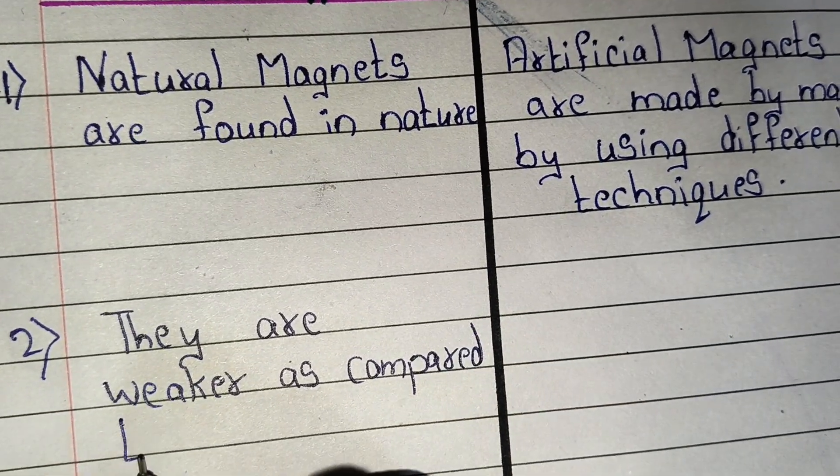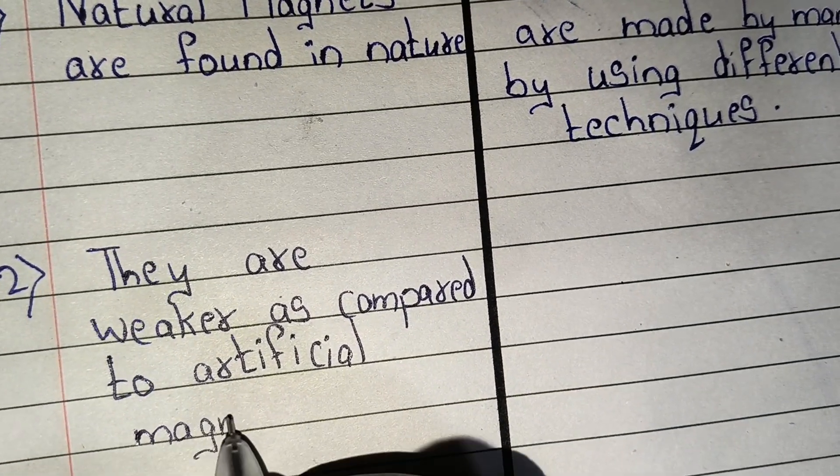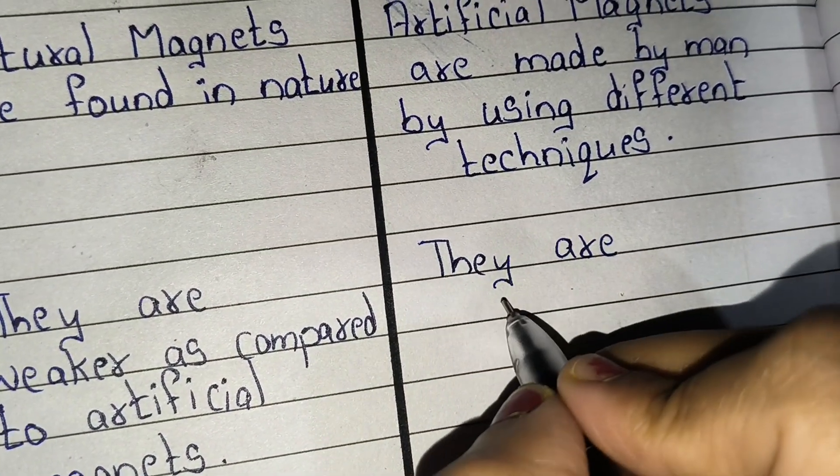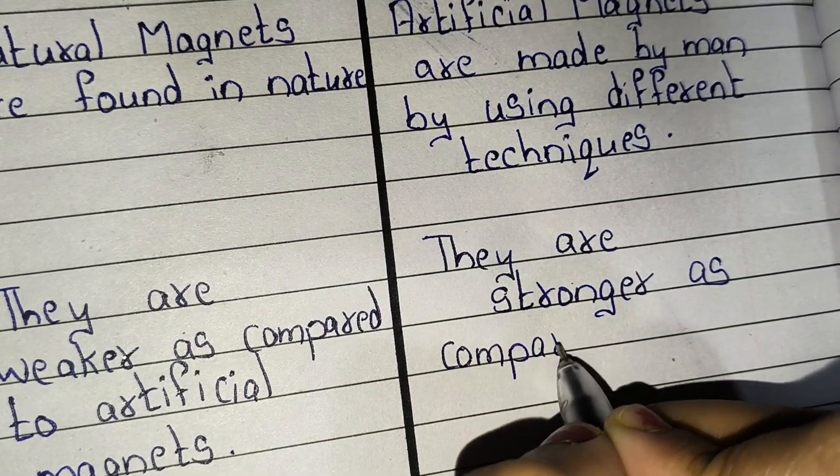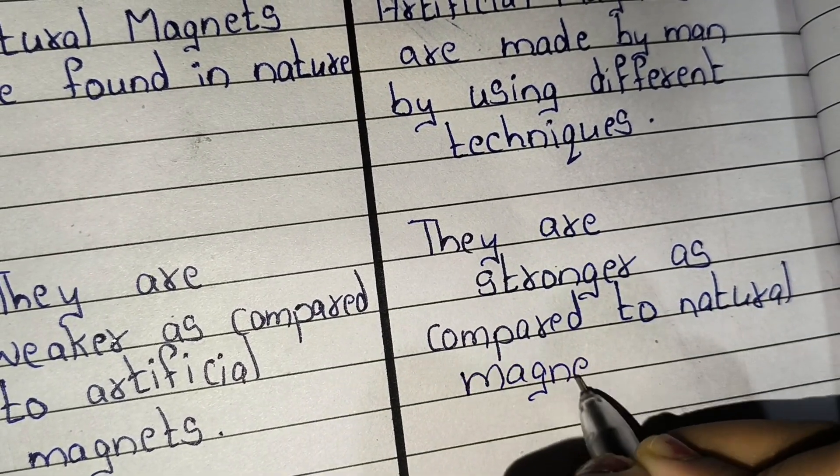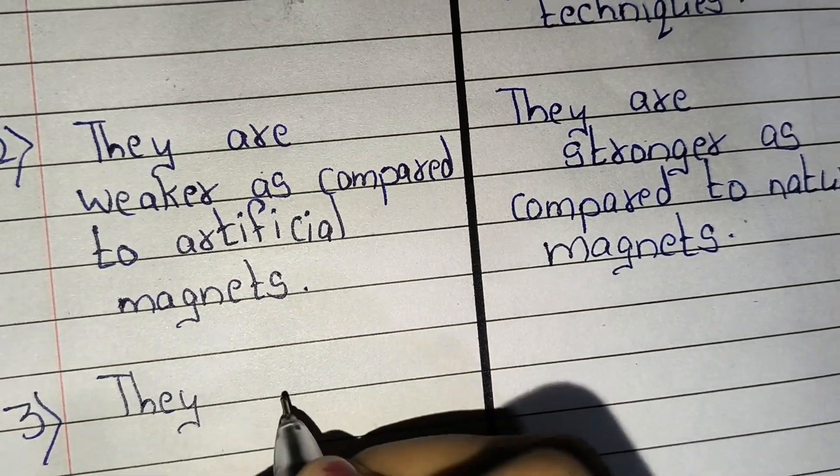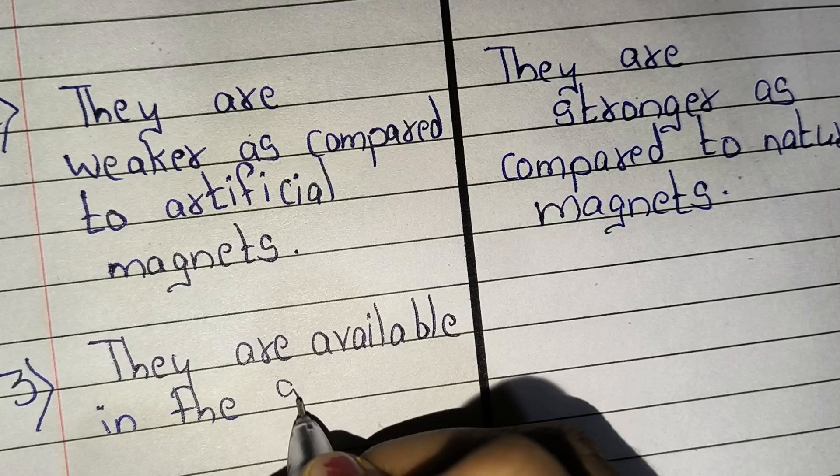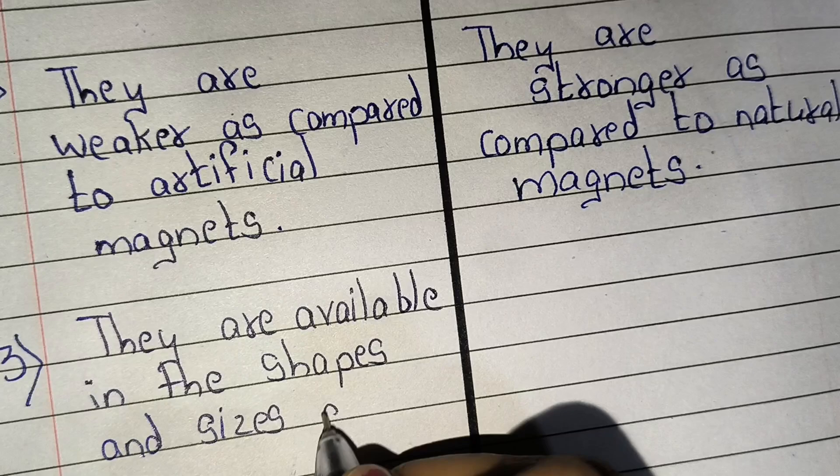compared to artificial magnets. Artificial magnets are stronger as compared to natural magnets. Third point: natural magnets are available in the shapes and sizes